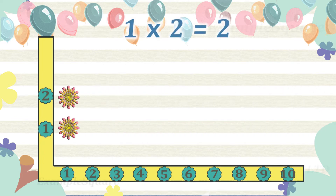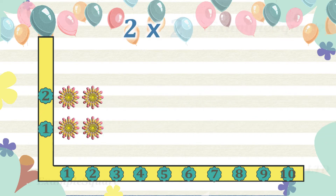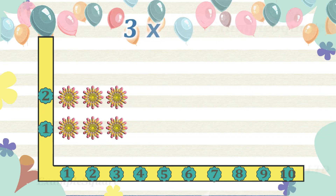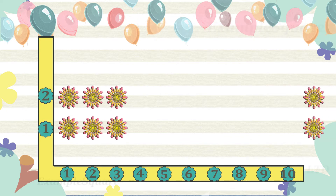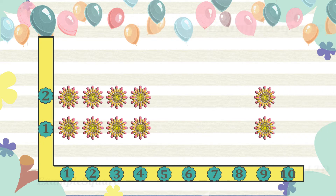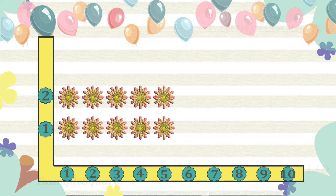1 times 2 is 2, 2 times 2 is 4, 3 times 2 is 6, 4 times 2 is 8, 5 times 2 is 10.